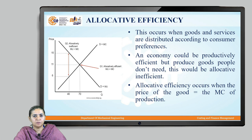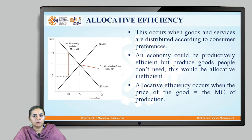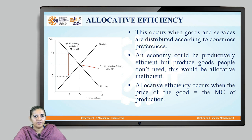The next type is allocative efficiency, which basically occurs when the goods and services are manufactured or distributed only as per the customer preferences. An economy could be productively efficient but produce goods people do not need — in that case it is allocatively inefficient. Looking at the graph with quantity Q on the X axis and price on the Y axis, the point Q1 is where the price of the good equals the marginal cost of production — that is the point where the company is allocatively efficient.